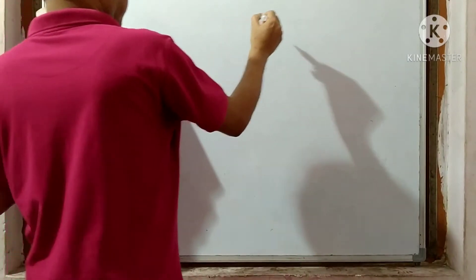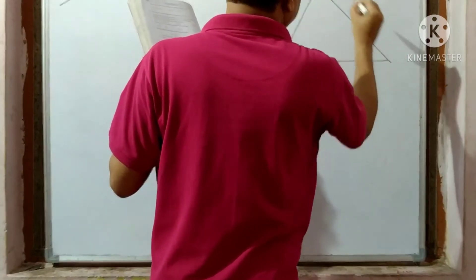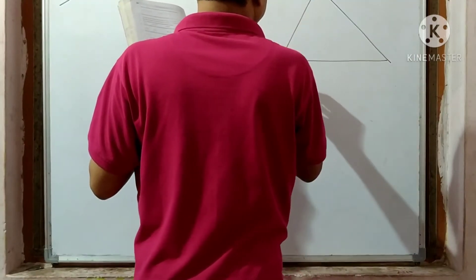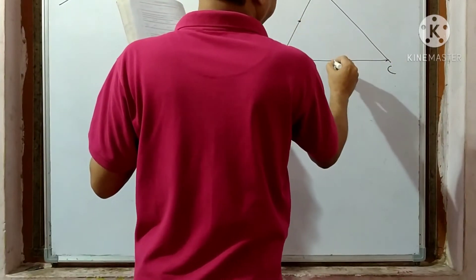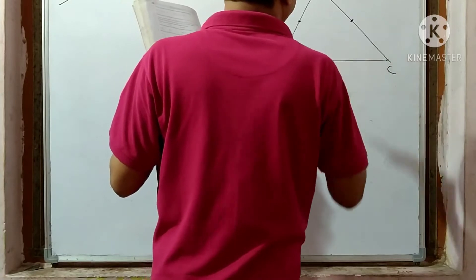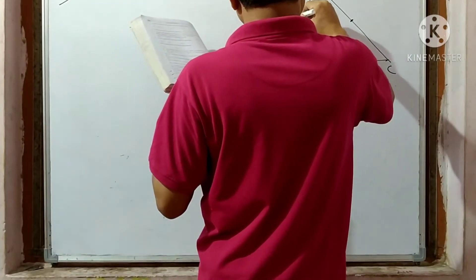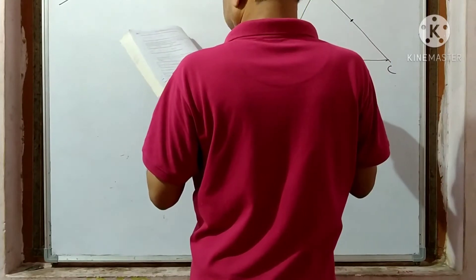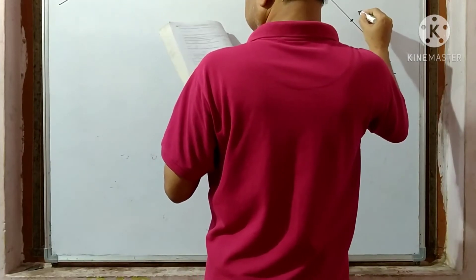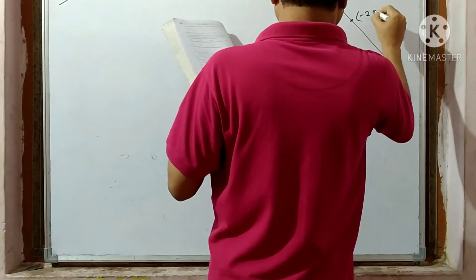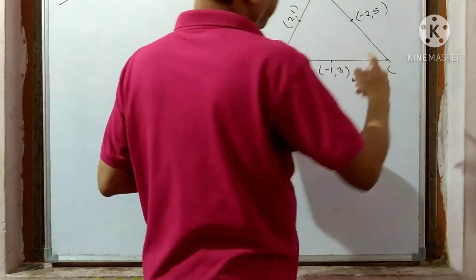You see here the figure — this is a triangle, that is A, B, C. The midpoints of the sides are given as (2, 1), (-1, 3), and (-2, 5). We have to find A, B, C.